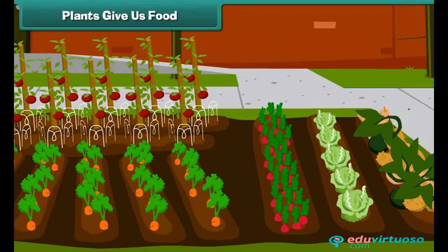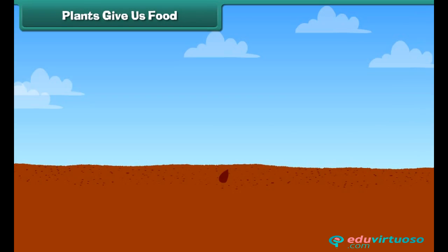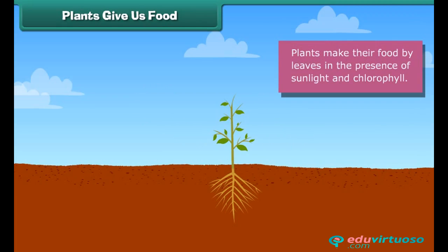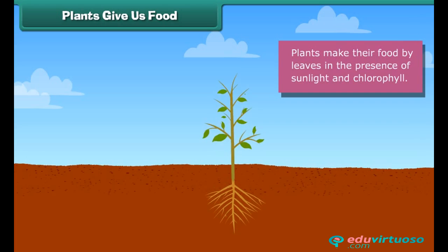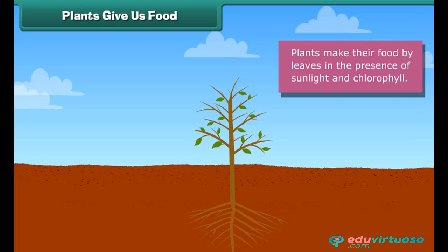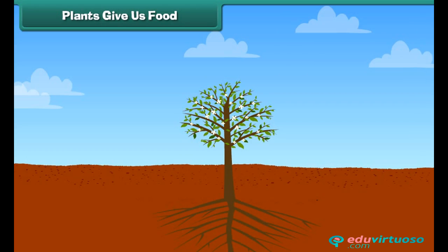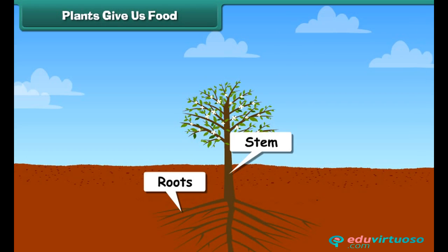vegetables and cereals. These plants also need food to grow. They prepare food by their leaves in the presence of sunlight and chlorophyll. Some food is used by the plants and the remaining is stored in different parts of plants like roots and stems.